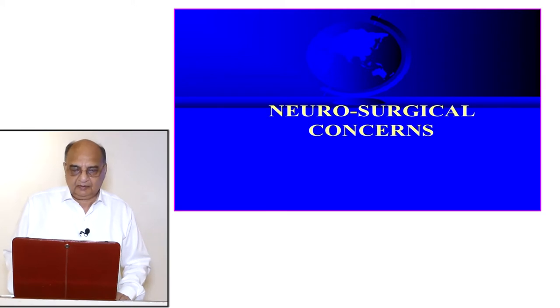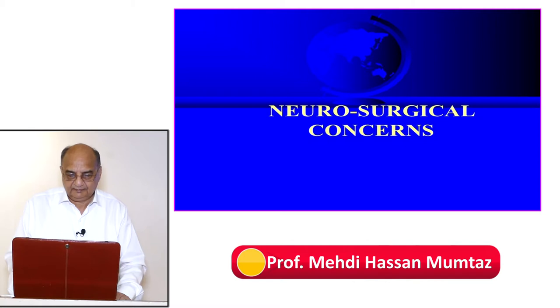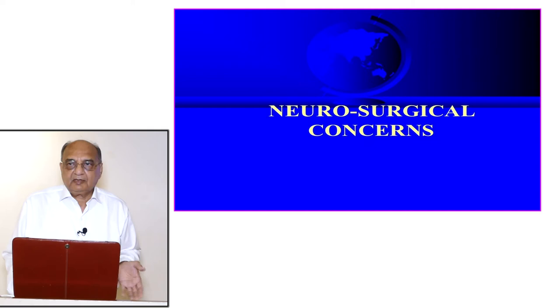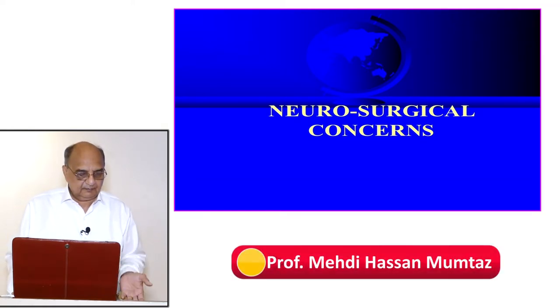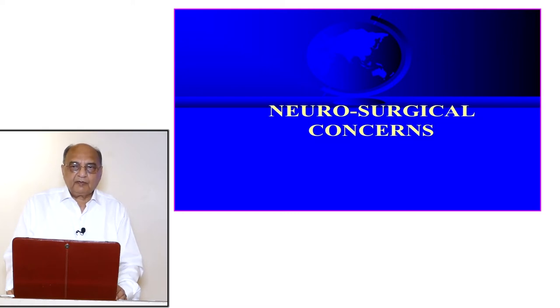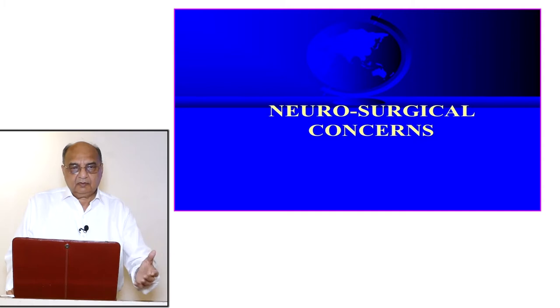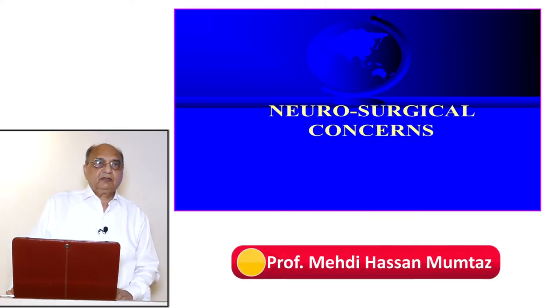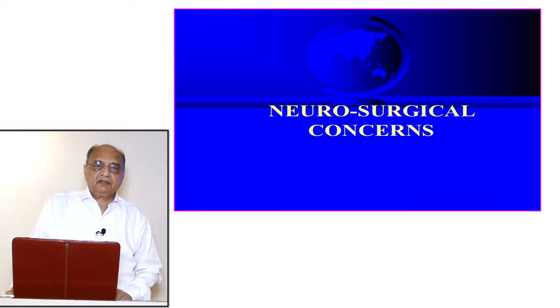We started with neurosurgical concerns. We have already covered two lectures going through the anatomical aspects of the brain, the different lobes, cerebral blood flow and how it is regulated — through auto-regulation, neurogenic regulation, and chemical regulation. Blood flow is about 40 to 50 mils per 100 grams of brain tissue, and the average brain weighs about 1400 grams.